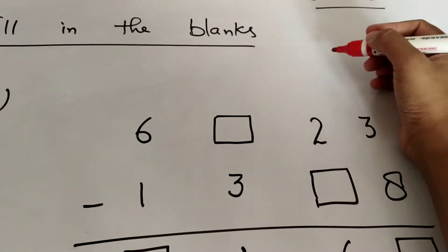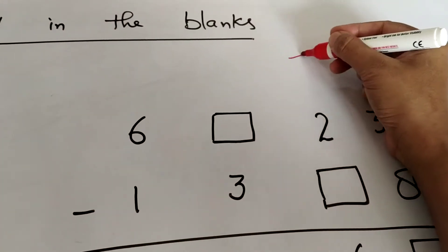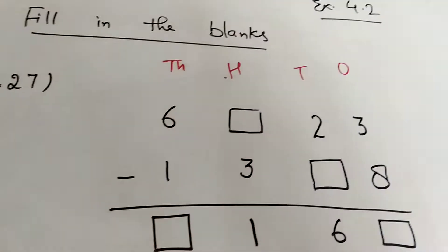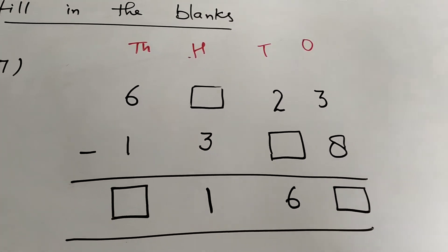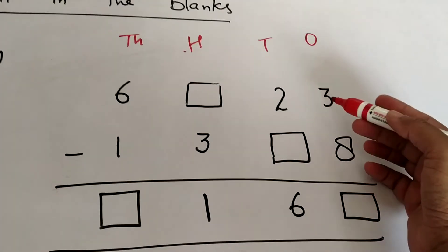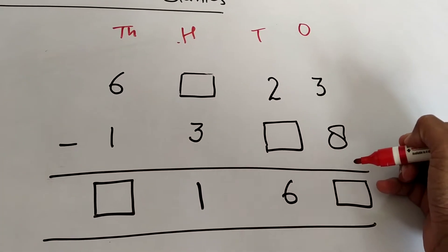First we will write the place values: ones, tens, hundreds, thousands. It will always be great if we write the place values so that it will be easy. Now we will start from here as usual.